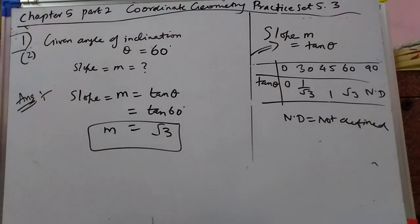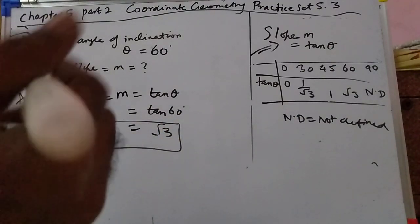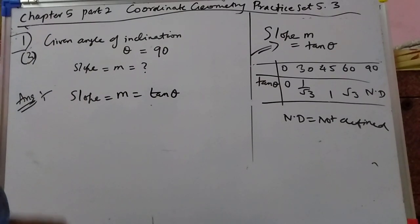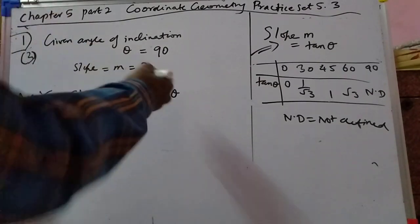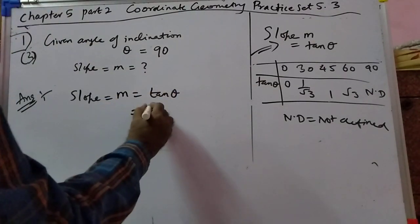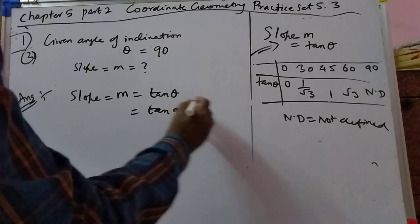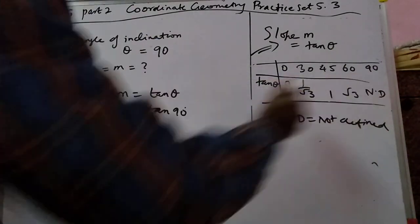Now let's do the third problem. Put the value here — it is equal to tan 90. But tan 90 is not defined.